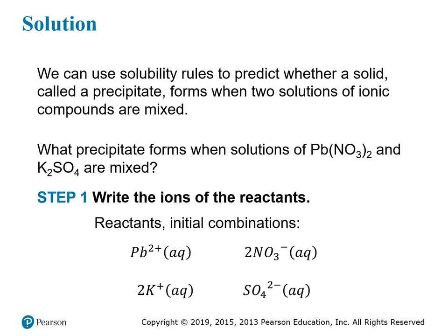To solve this, first write down the ions present initially. Lead nitrate in solution gives lead ions and nitrate ions. Potassium sulfate in solution gives potassium ions and sulfate ions — all soluble. But in solution, the ions might change partners: lead, originally attached to nitrate, may also be attracted to sulfate. Positive ions won't attract each other, so lead and potassium won't pair up. The cross-interactions are what matter — lead could pair with sulfate, and potassium could pair with nitrate.